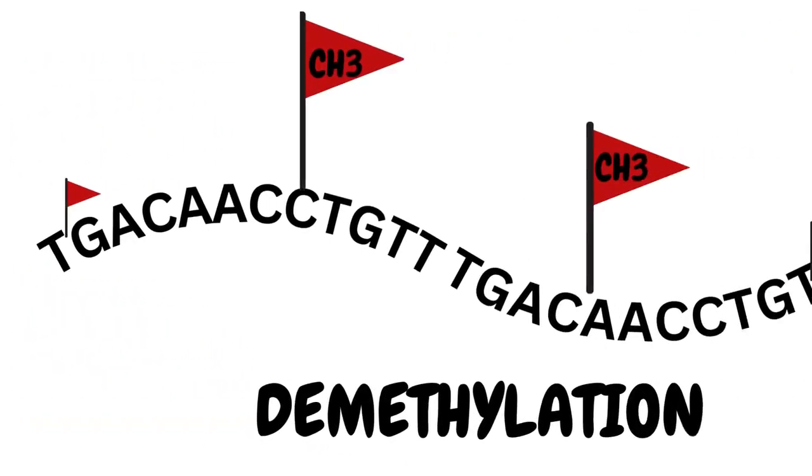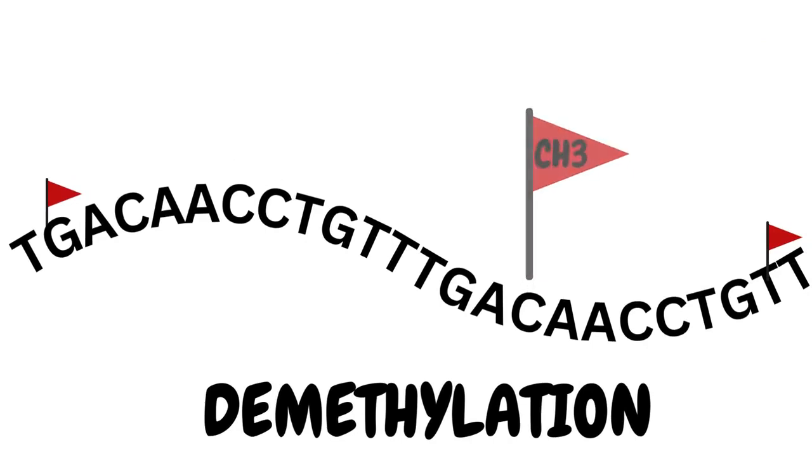The opposite can also happen. Demethylation removes methyl groups from the DNA, and this unblocks transcription, turning the gene back on.